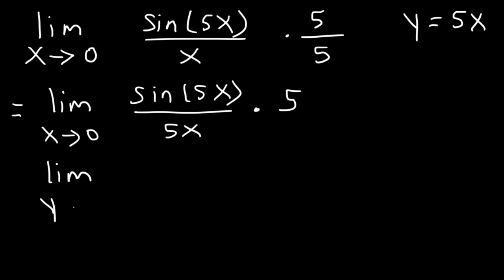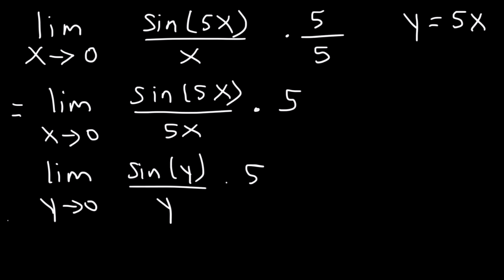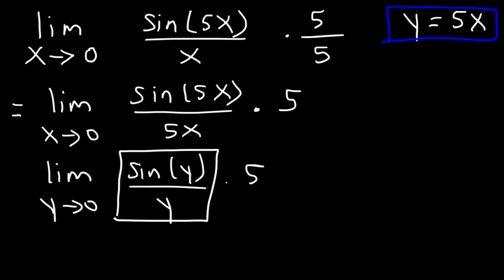By making that substitution, we can change the limit to: the limit as y approaches 0 of sine y divided by y, times 5. Using the formula — the limit as x approaches 0 of sine x over x equals 1 — the limit as y approaches 0 of sine y over y also equals 1. So this is 1 times 5, which equals 5. That's the answer.